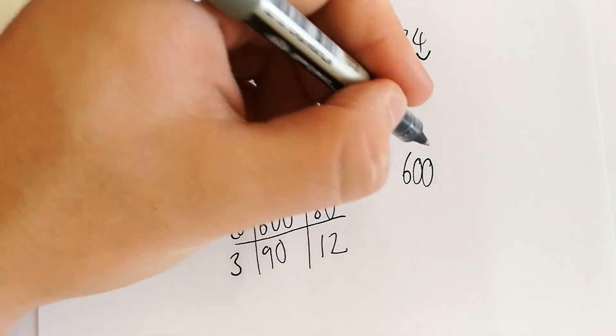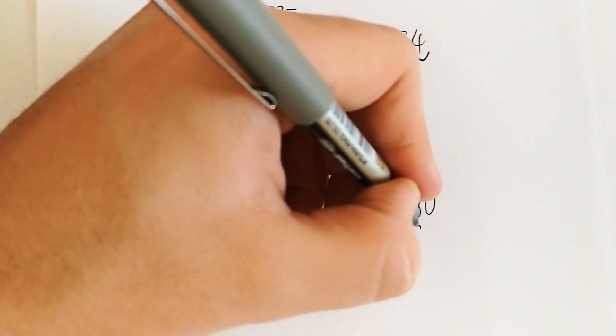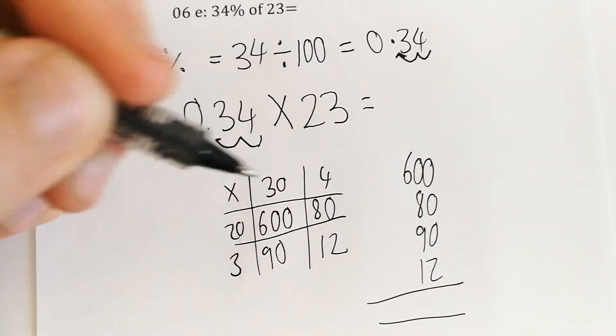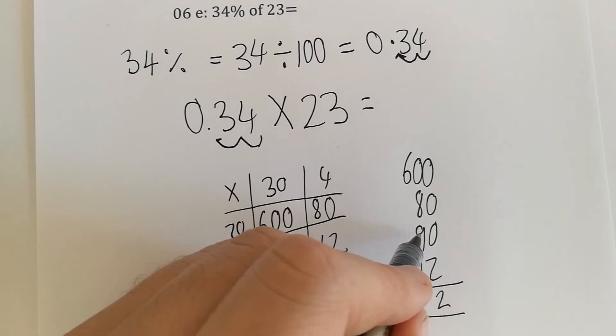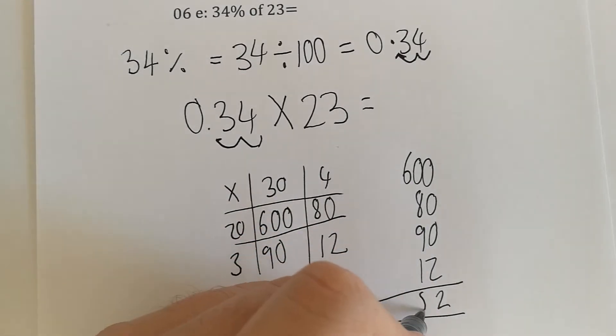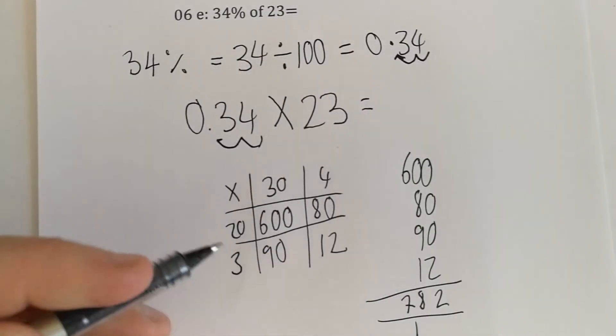We've got 600, 80, 90, and 12. Add these up: all the zeros and 2 is just 2, 8 plus 9 is 17 plus our extra 1 is 18, and then 6 plus 1 is 7. So we've got 782, but we move our decimal point.